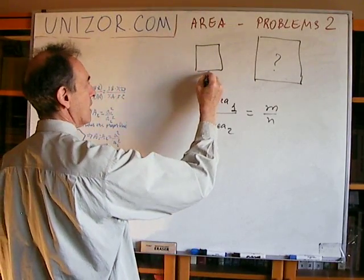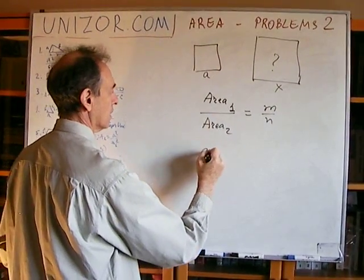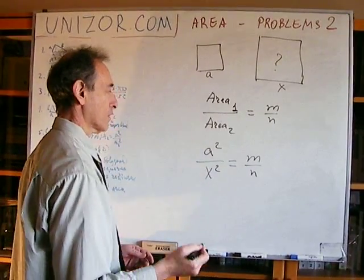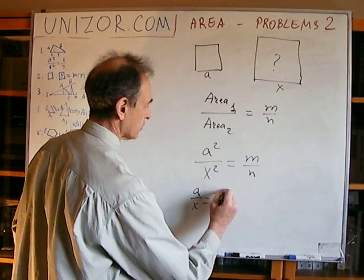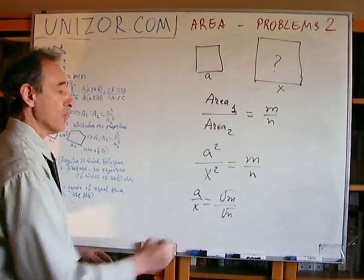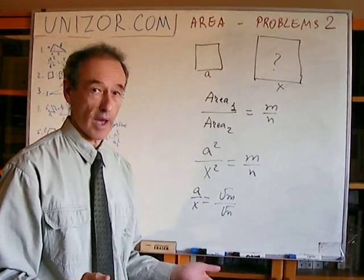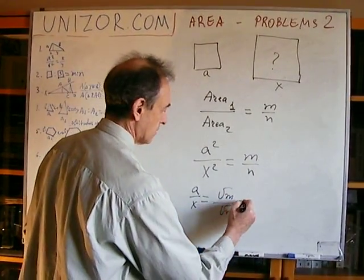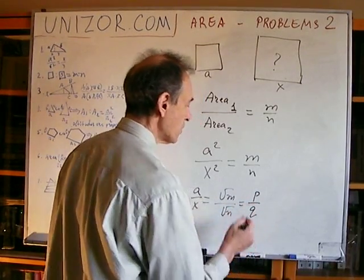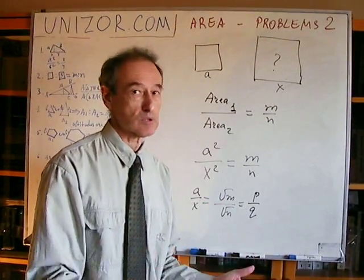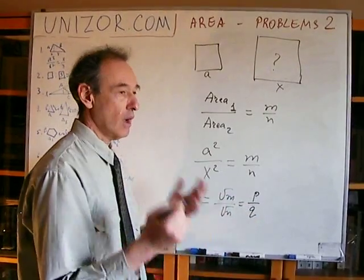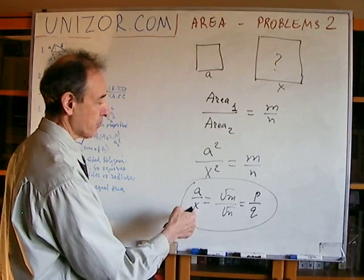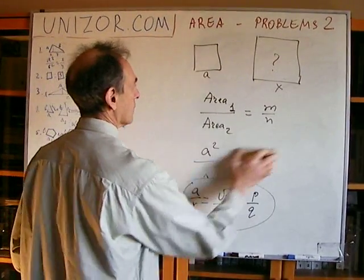We now know how to construct square root of m. Applying this to our problem: if this square has side a and the second has side x, then area one equals a², area two equals x², and their ratio is supposed to equal m over n. So a over x equals square root of n divided by square root of m. We know what square root of m and square root of n are since we know m and n. Let's call these segments p and q — they are known, or easily constructable.